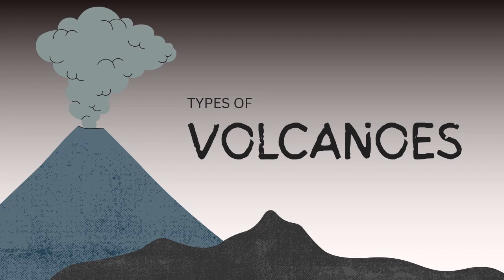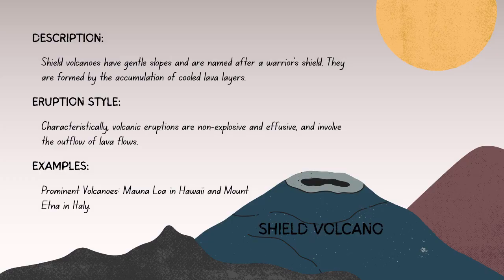Now let's look at the types of volcanoes. The first type is the shield volcano — characterized by its broad, gently sloping profile resembling a warrior's shield. These volcanoes are primarily built by the flow of low-viscosity basaltic lava. Their eruptions are non-explosive and effusive, involving the outflow of lava.